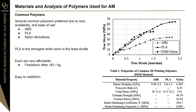Some common types of polymers that can be found are ABS, PLA, and nylon derivatives. You can see here the comparison between their true stress and true strain, where PLA is a little bit stronger than ABS and nylon, but it's also the least ductile. They are all very affordable, often costing less than $1 per kilogram, making them very attractive for quick, mass-production applications.